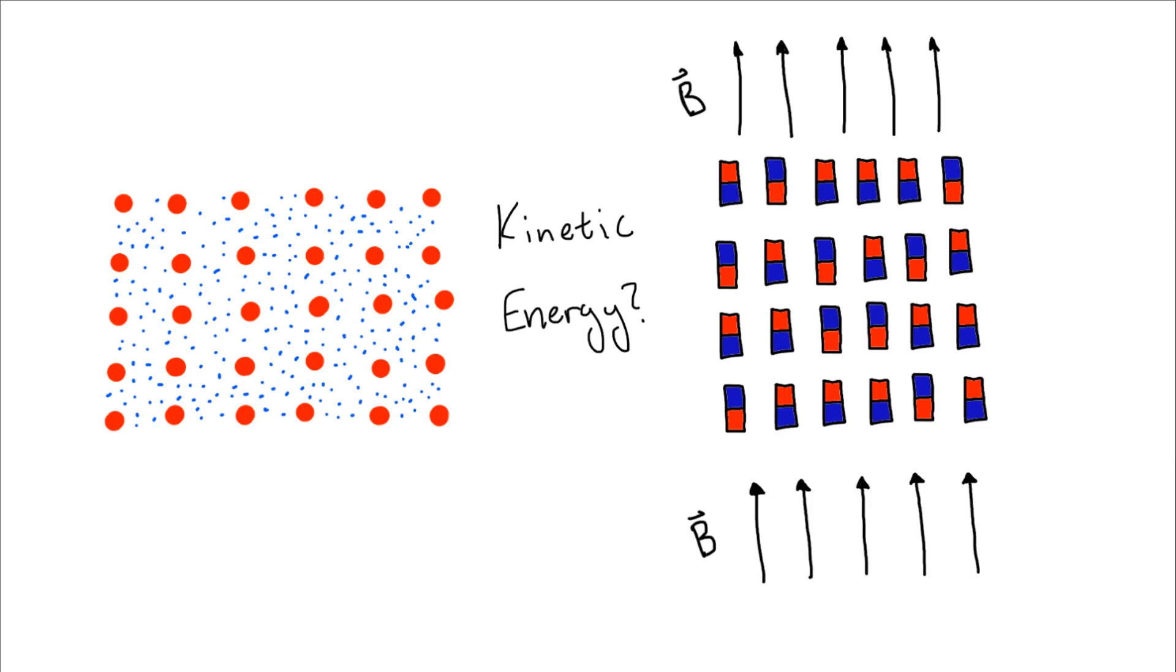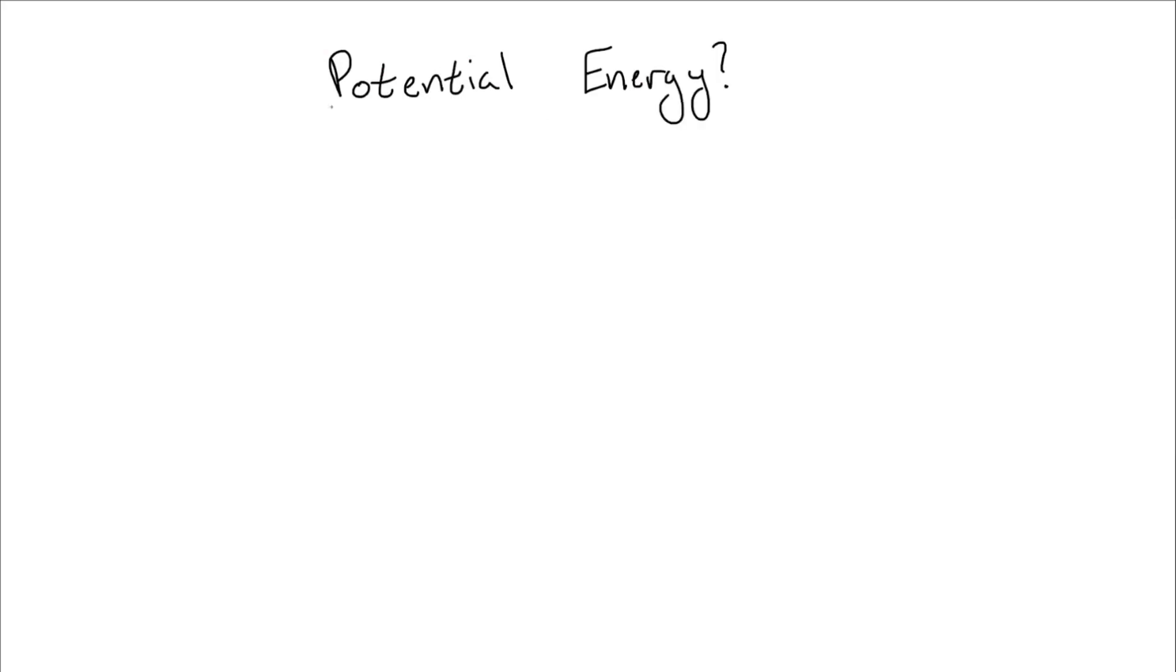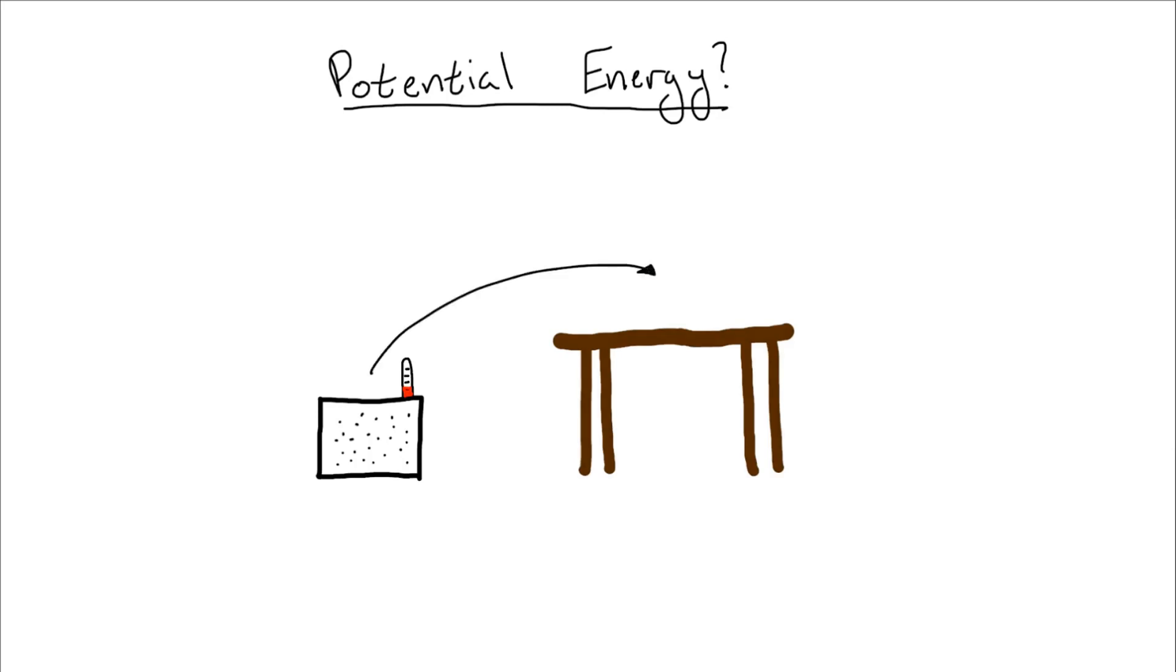Our first guess might be to use the average total energy rather than the average kinetic energy, but it's pretty easy to see why this doesn't work by thinking about what happens to an insulated box of gas when we move it from the floor onto a table. Since it's now higher off the ground, it gains a bit more gravitational potential energy. If temperature is based off of total energy, then the temperature should rise, but we know this doesn't happen.